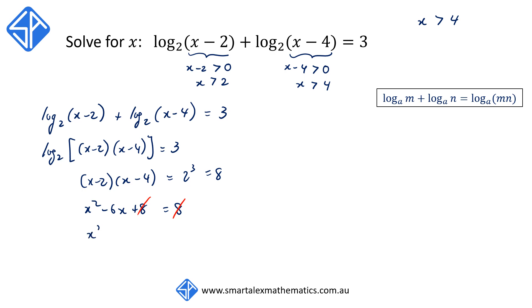So we have the quadratic equation x squared minus 6x is equal to 0. Factorizing the left-hand side, x times x minus 6 is equal to 0. So therefore, x can either equal 0 or x is equal to 6.